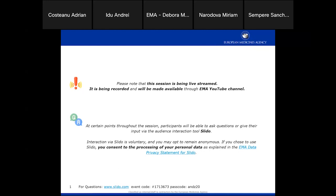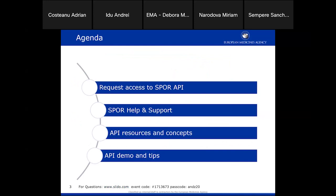Good afternoon everybody. My name is Adrian Costano and I am the SPOR platform manager for EMA. Welcome to our third webinar on the SPOR API registration and usage. The agenda for today: we will discuss how to request access to the SPOR API and go through the workflow. I will provide information on where to get help and support, then move into the more technical part covering API resource concepts, a demo of how the SPOR API works, and tips on what to do — and more importantly what not to do — when using the SPOR API.